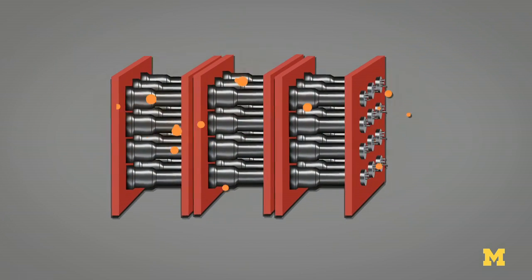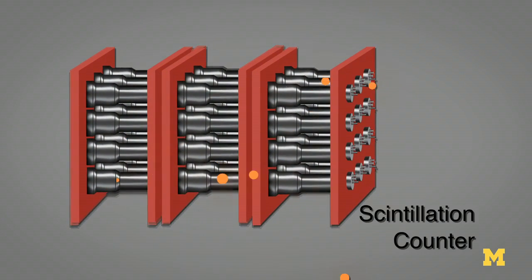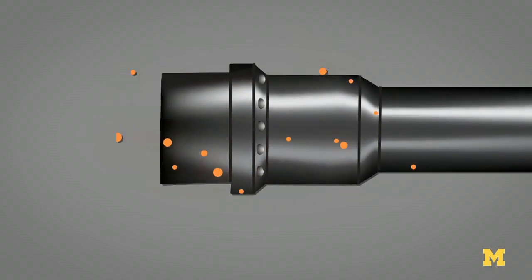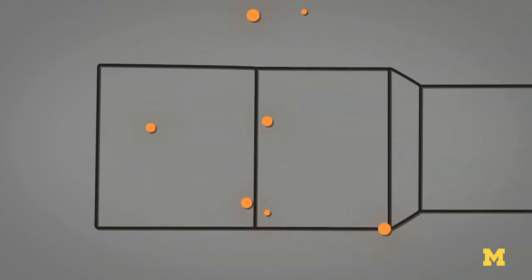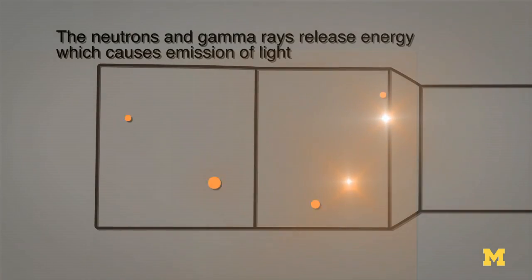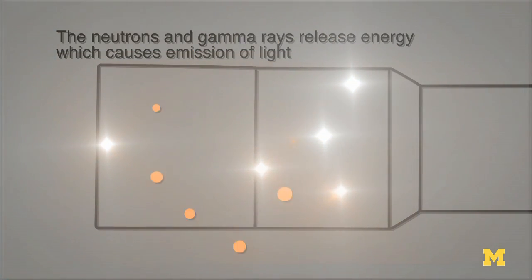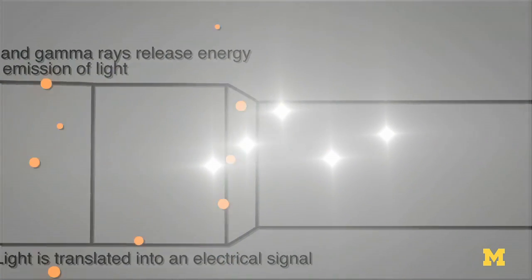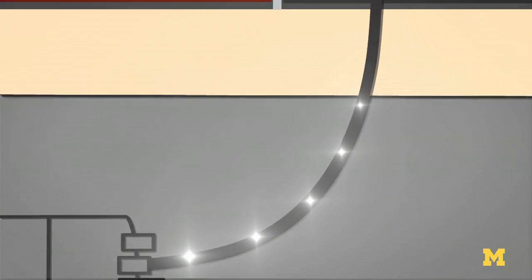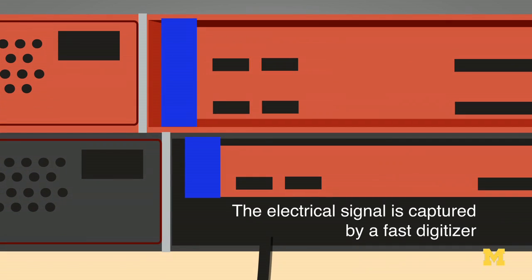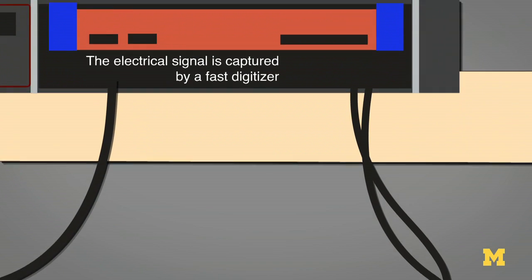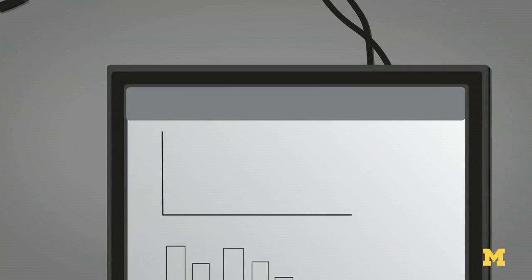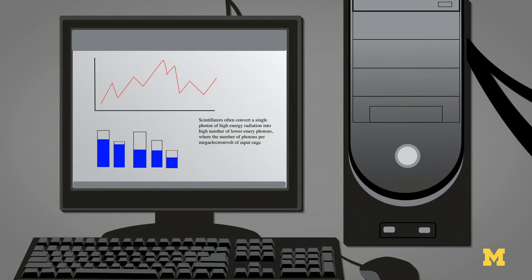The neutrons and the gammas deposit energy inside these detectors, and then the energy produces light — so they scintillate. That's why they're called scintillators. This light is then converted to an electrical signal and captured by fast digitizers, and the signal from the digitizers is stored inside computers.